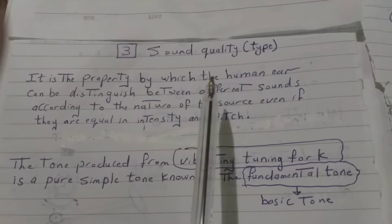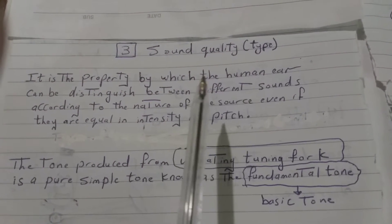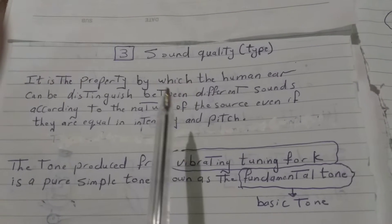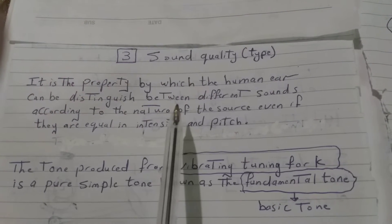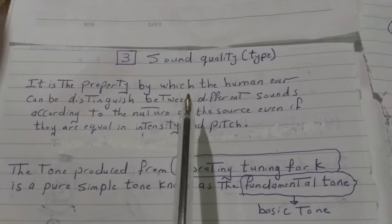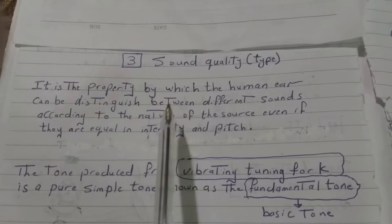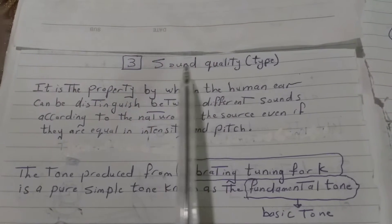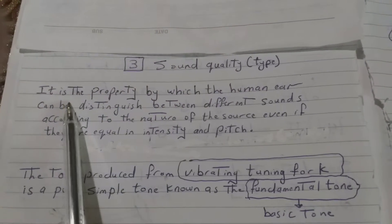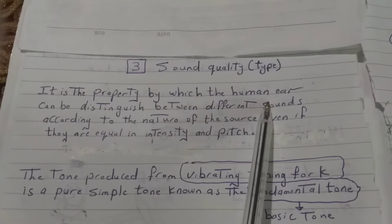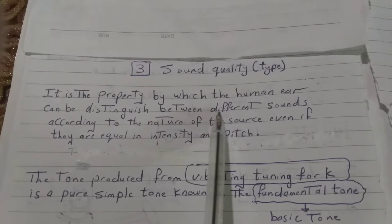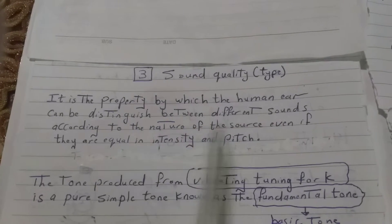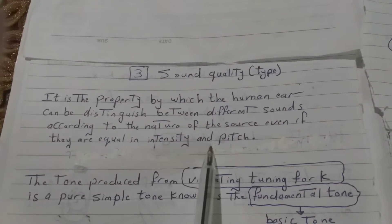We hear different sounds around us, like the sound of cars, sound of bell, sound of men, sound of women, sound of lion. This is called the sound quality or sound type. Sound quality or sound type is a property by which the human ear can distinguish between different sounds according to the nature of the source, even if they are equal in intensity and pitch.